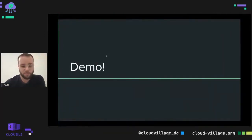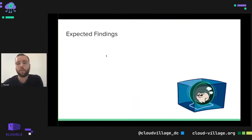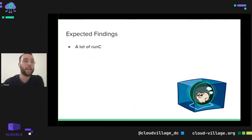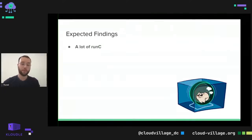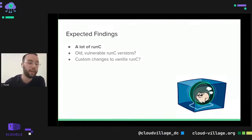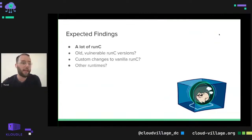Let's talk about what we expect to find with this tool, before we discuss the implementation. Like we saw with IBM Code Engine, we can expect a lot of RunC — it's the industry standard container runtime. We might see some old and vulnerable RunC versions. We might see some custom changes that a cloud provider made to vanilla RunC, and we might even see other runtimes, maybe proprietary runtimes. You really can't know.